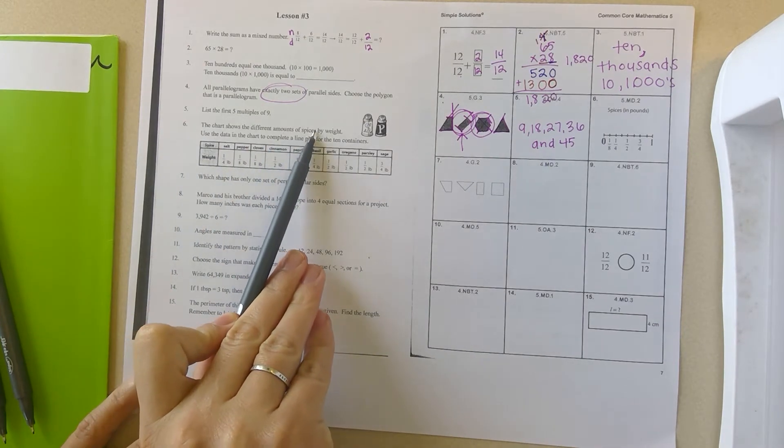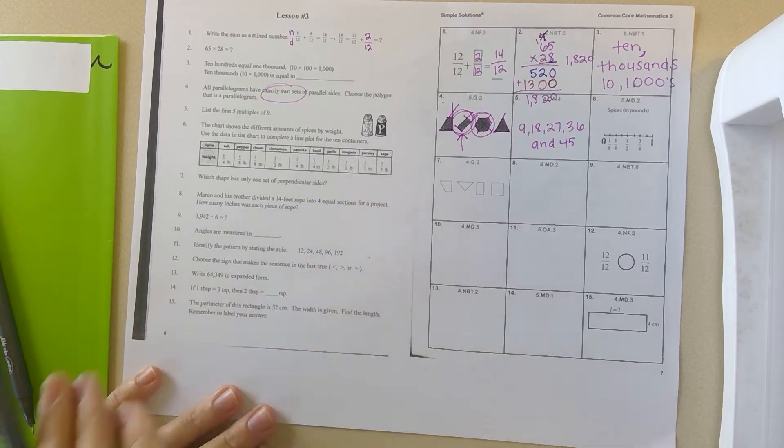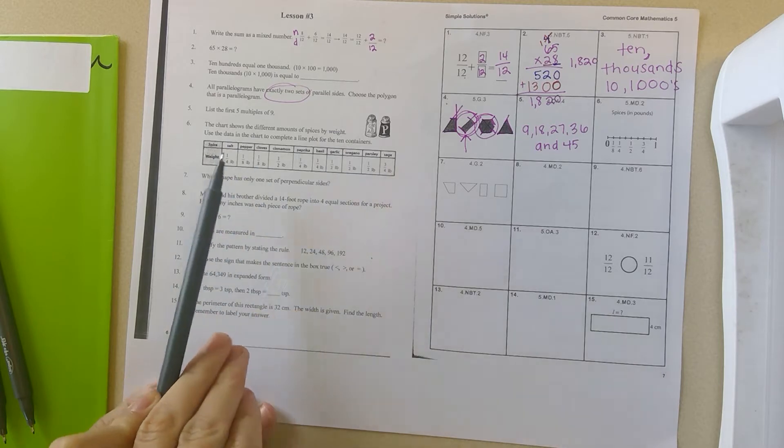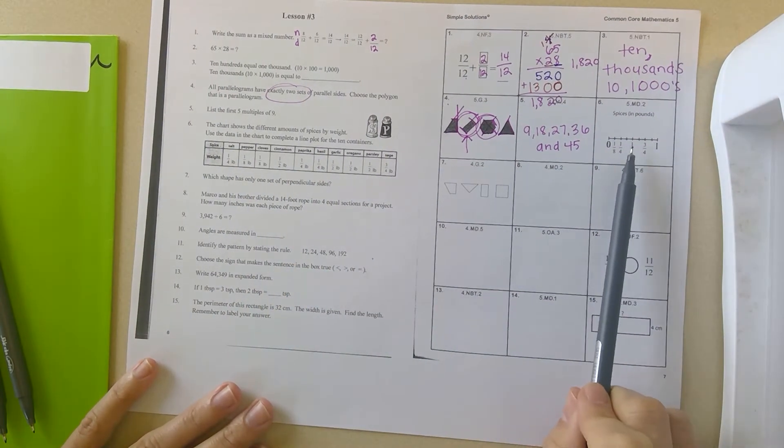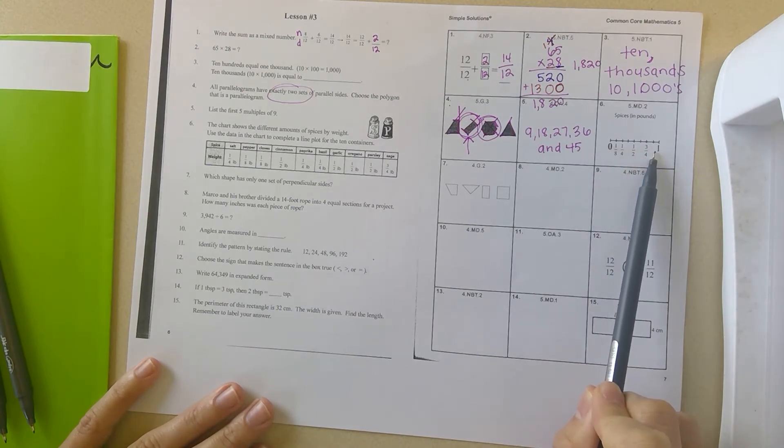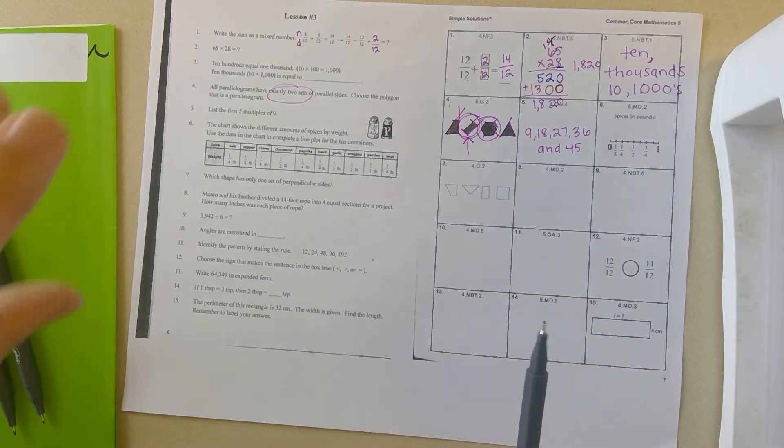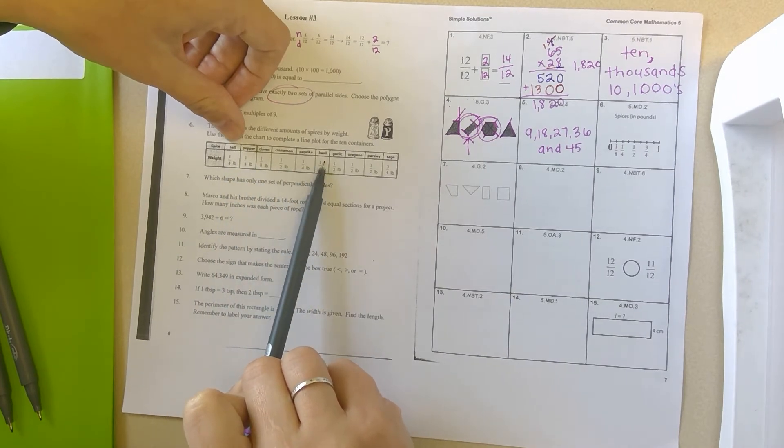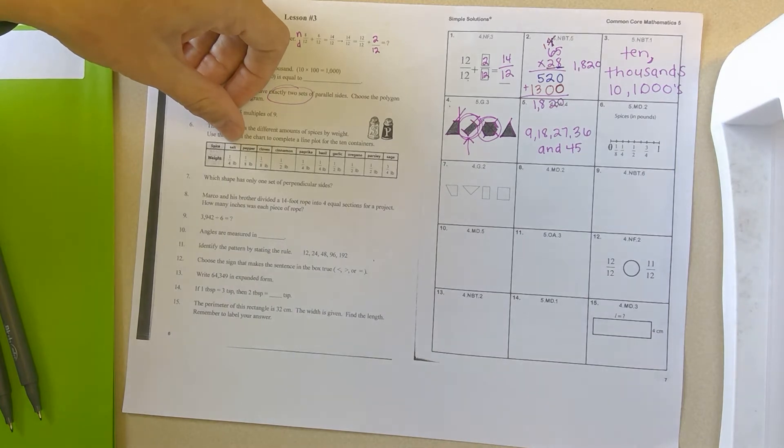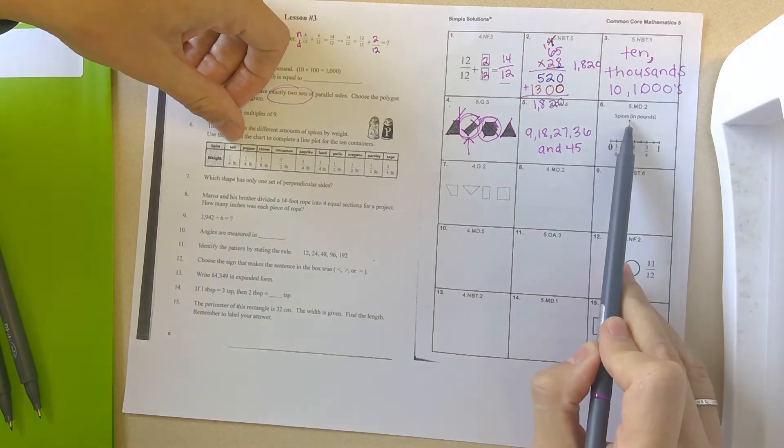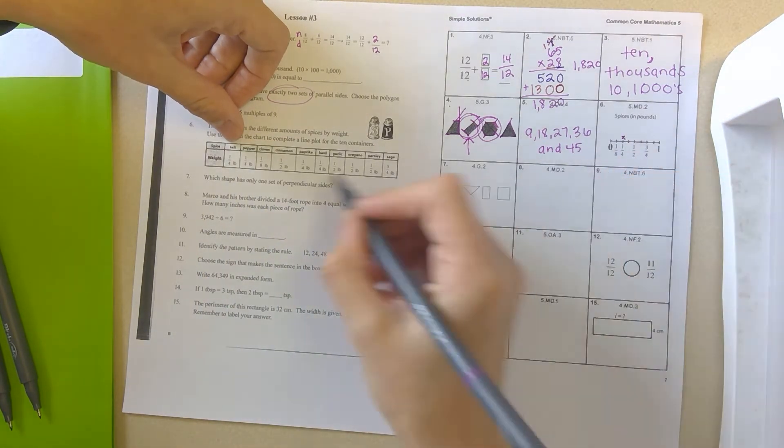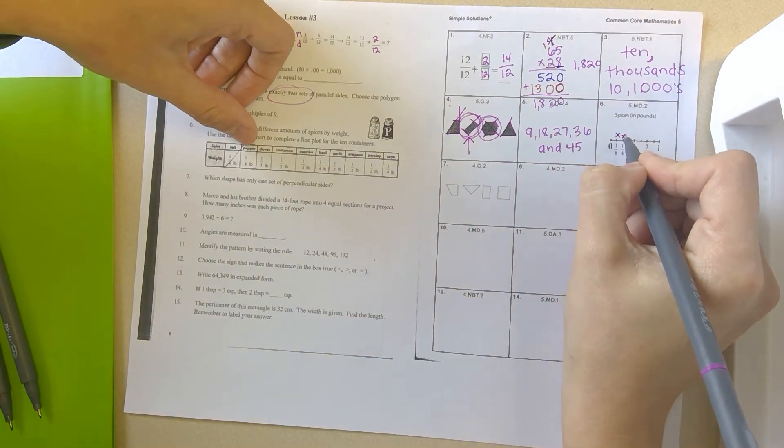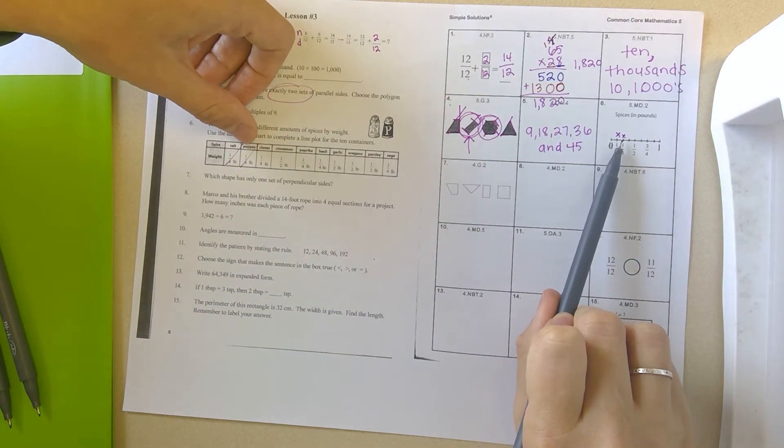Number six, the chart shows the different amounts of spices by weight. Use the data in the chart to complete a line plot for the 10 containers. So it tells us the spice name on the top and the weight of that spice on the bottom. So when you are doing a line plot, each of these spices will have an X on this line plot. So if you look at this line plot, it goes from zero to one whole. And then they have fractions here. They have one eighth, one fourth, one half, and three fourths. So what I'm going to do is I'm going to start actually at salt. And I'm just going to work my way through. And I'm going to put a line through the box to let me know that I've already put that there.